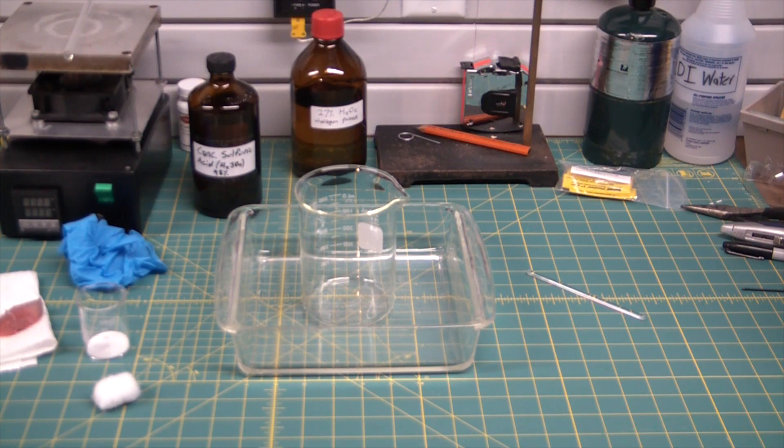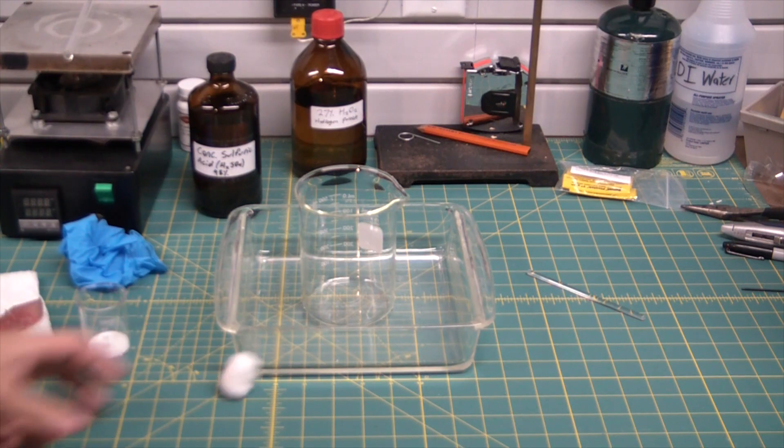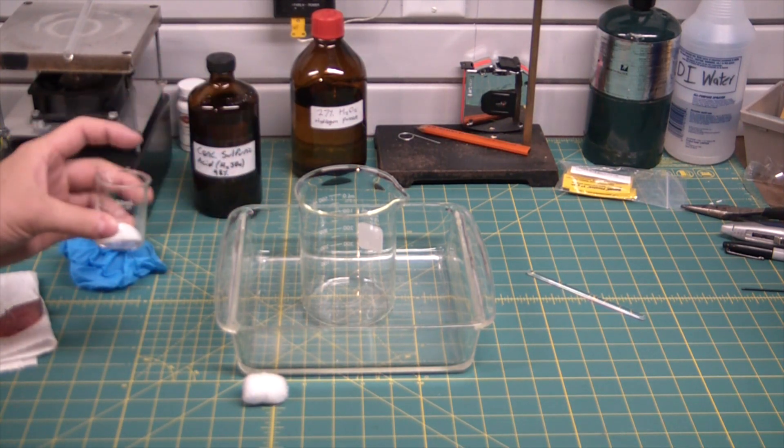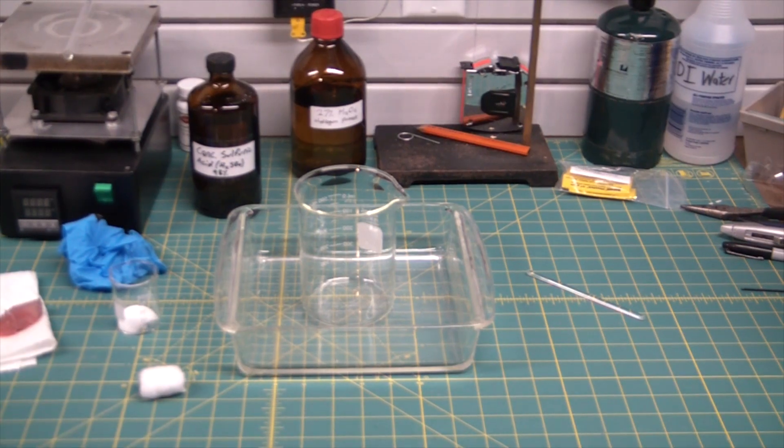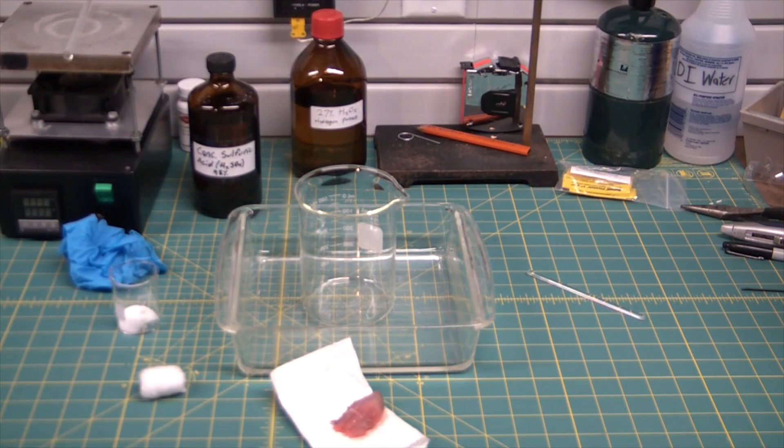So first we're gonna test the cotton ball, which is pretty much a solid form of carbon. It's a carbohydrate. Same here with sugar, some table sugar, sucrose, which is basically just carbon. And then of course some meat. I say that's cooked, some people would say that's raw. Being a man, I think it's cooked.